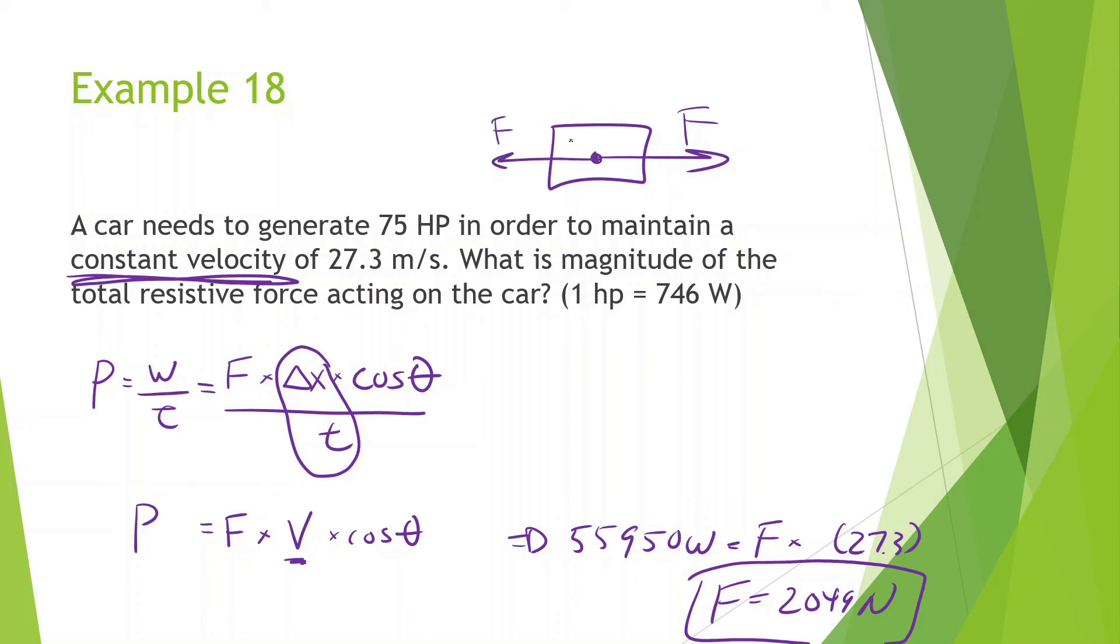Or else, if only one of them was here, it'd be accelerating. But since it's not accelerating, they have to be canceling out. So this is 2049, and this is 2049. Alright, moving on.